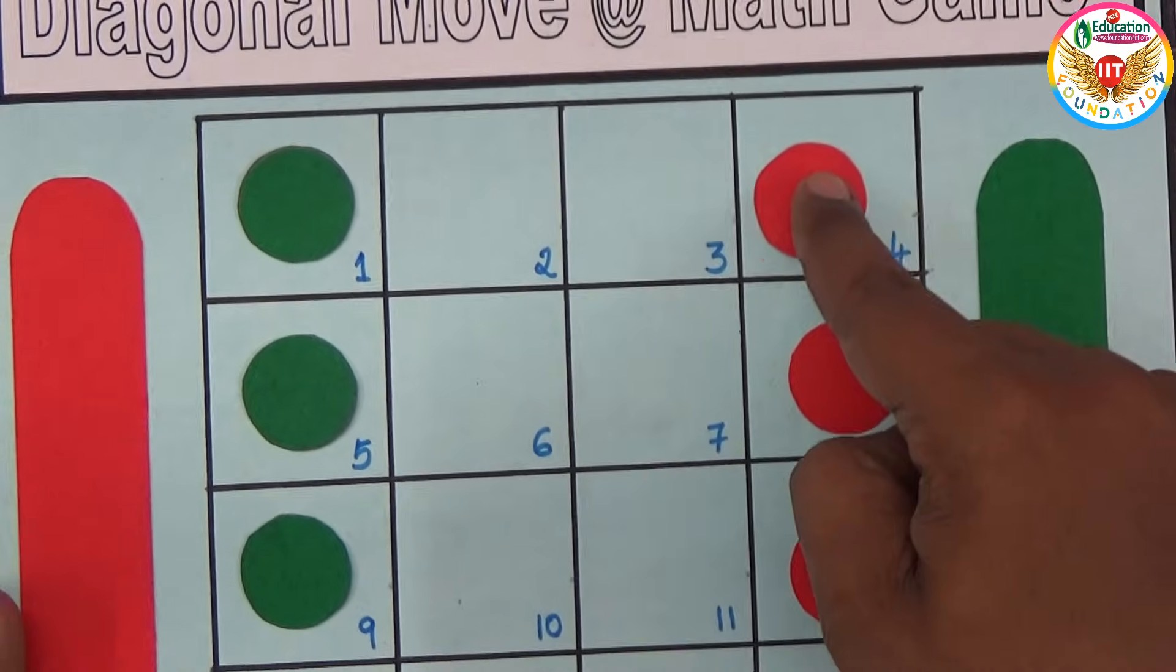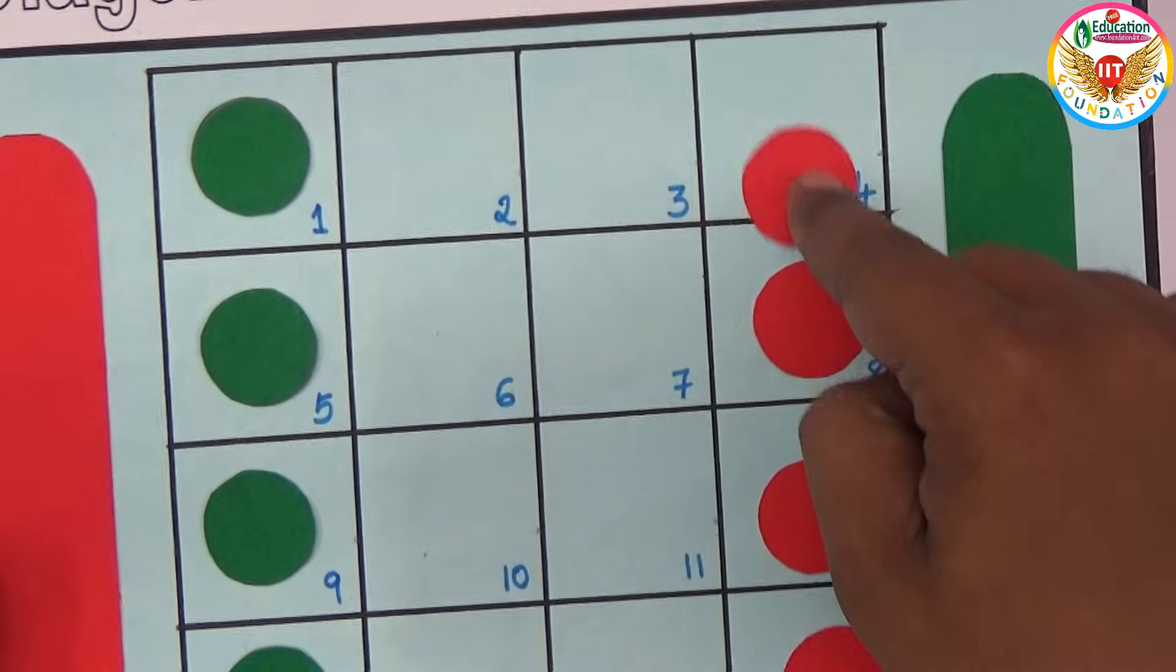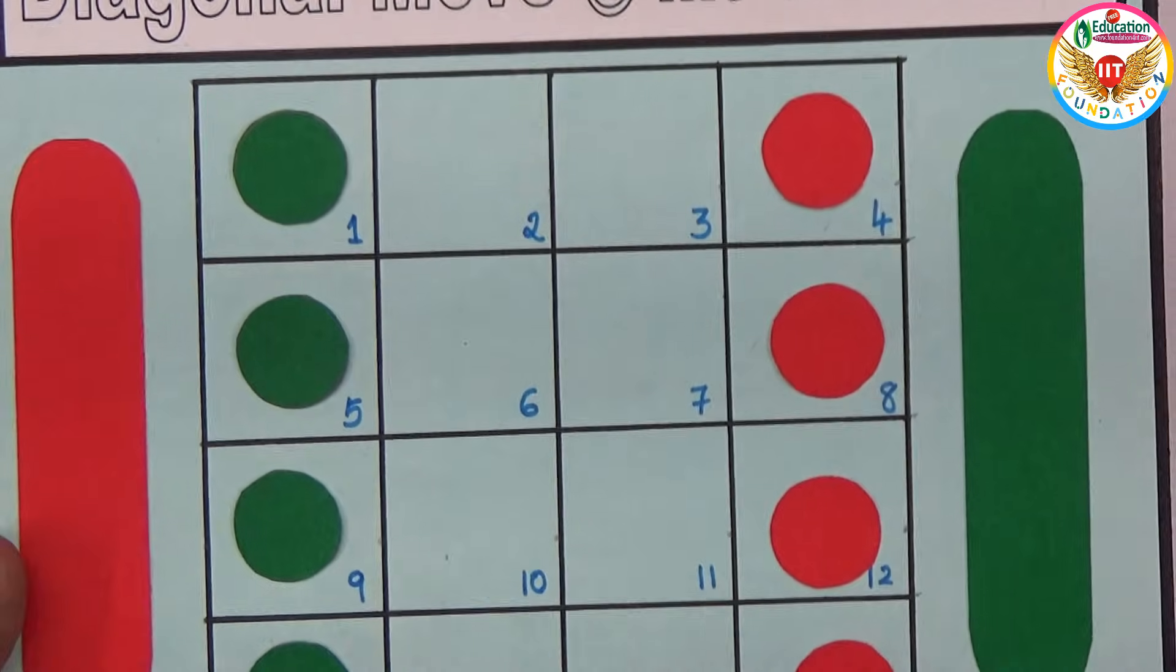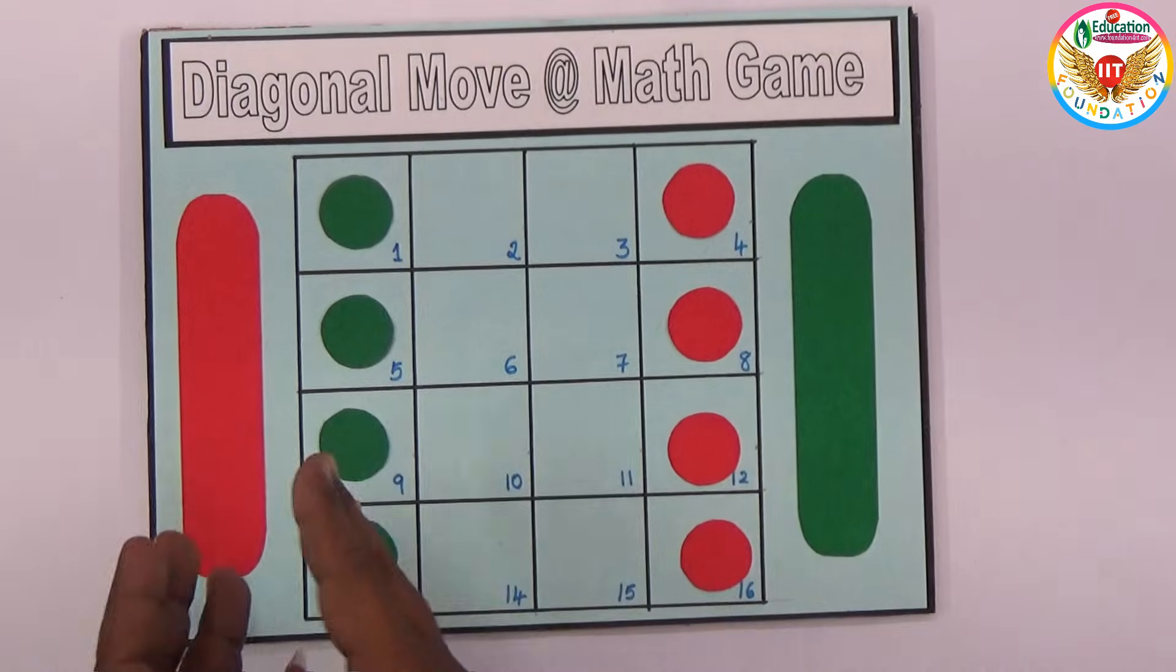This is a diagonal move game. You can only move the circles by diagonal moves, like an X. Not plus or minus type movements, only diagonal moves.